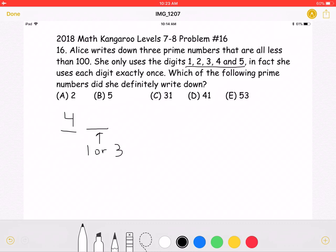Now, let's see. If we choose 43, the remaining numbers would be 1, 2, and 5.